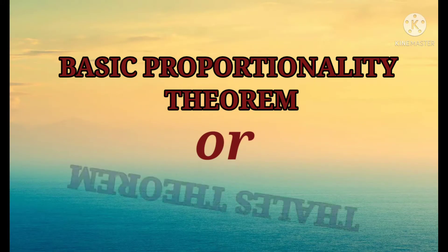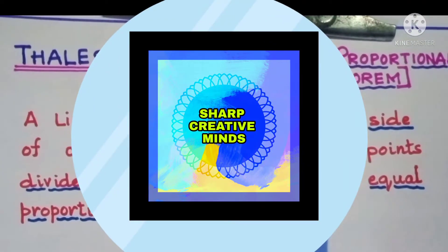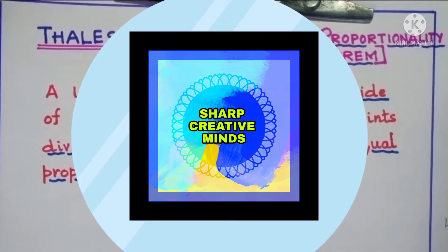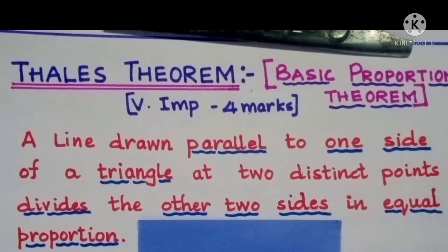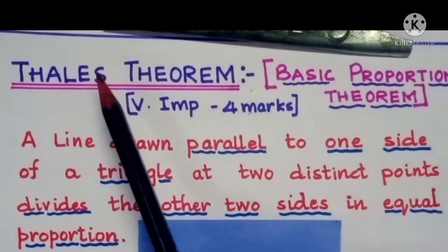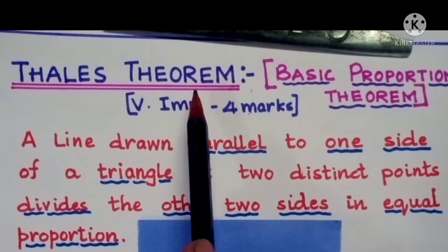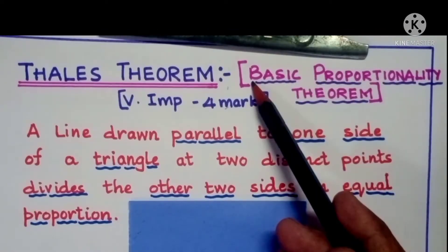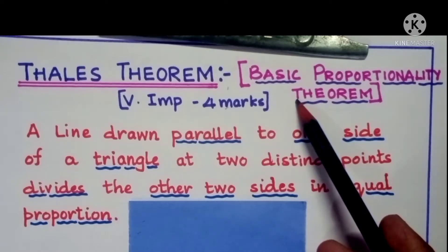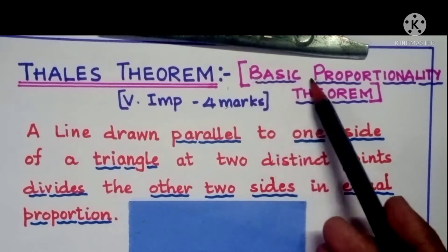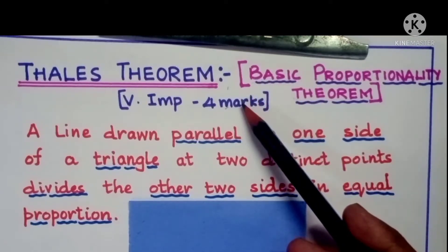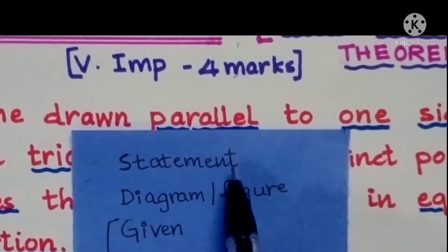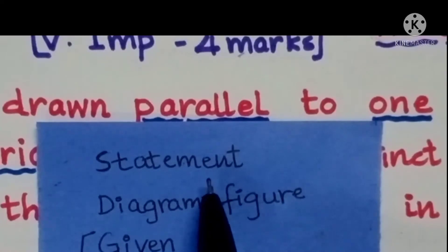Good morning children, welcome back to Sharp Creative Minds Mathematics channel. Today we are going to learn one of the most important theorems in your class — the Thales theorem. This theorem has another name; it is also called the Basic Proportionality Theorem, shortcut BPT. If you see anywhere in question papers 'state and proof BPT,' you have to write the Thales theorem, or the question can be asked as 'state and proof Thales theorem.'